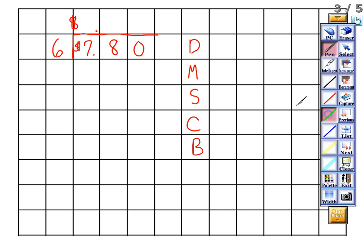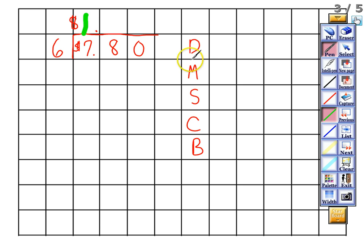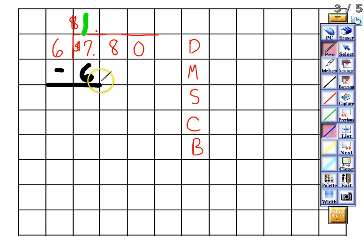First, we see how many times six goes into seven — that goes one time. We write our one in the quotient, then multiply: one times six gives us six. Now we subtract: seven minus six gives us one. We check that one is less than our divisor, and it is. Now it's time to bring down the eight.